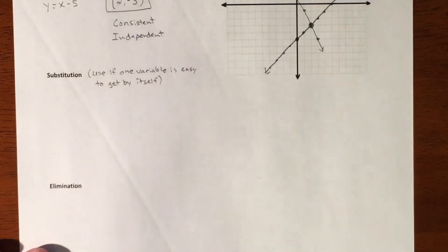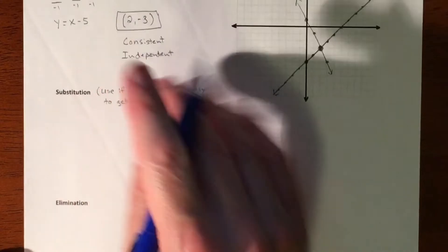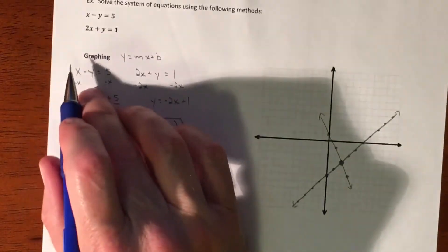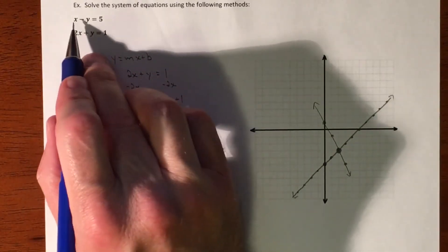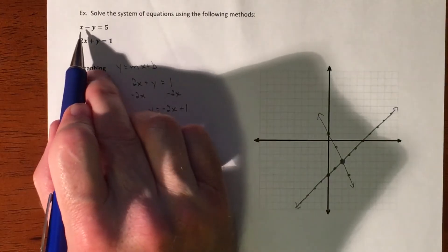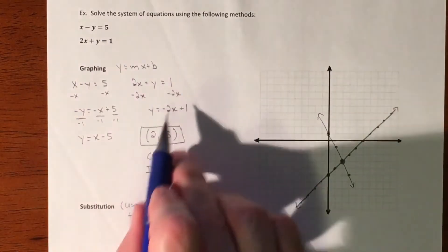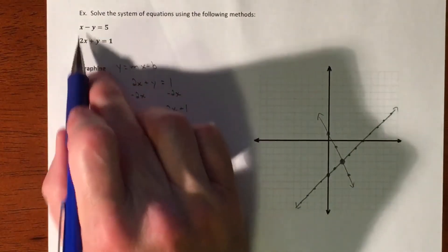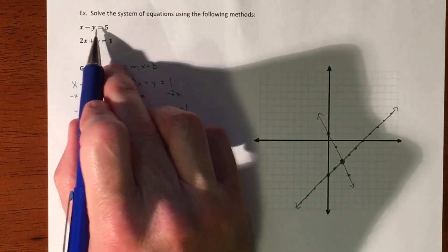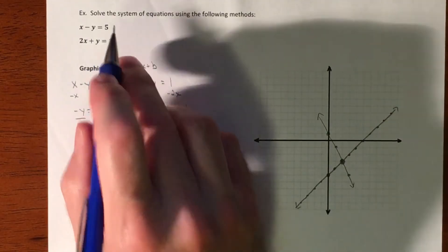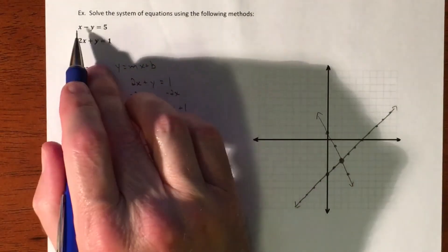So if there's one variable that's easy to get by itself, I would use substitution. It really doesn't matter. So here are your two equations. Let's say we'll take that x and get it by itself. It would be just as easy to get that y by itself. So we'll pretend like we didn't do this and we're just kind of starting from scratch. So let's say we take the x minus y equals 5 and we'll get the x value by itself. So we're going to bump over the y.